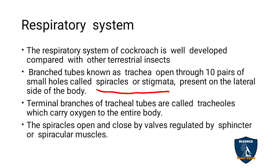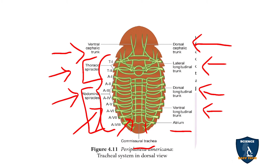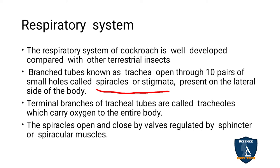The terminal branches of tracheal tubes are called tracheoles. The trachea has branches at the terminal portion — these branches are called tracheoles. These tracheoles carry oxygen to the entire body.